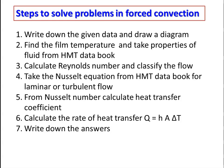Calculate the Reynolds number. For a flat plate: Re = U∞·L / ν; for a cylinder or sphere: Re = U∞·D / ν. Classify the flow as laminar or turbulent. Based on the type of flow, geometry, Prandtl number, and fluid type, take the Nusselt number equation from the HMT data book. Then substitute the values and calculate the Nusselt number, which is a function of Reynolds number and Prandtl number.